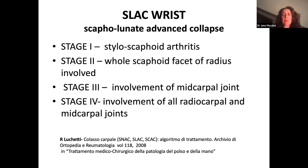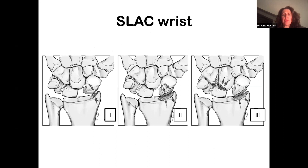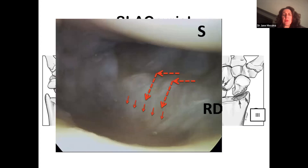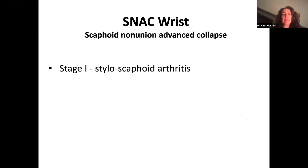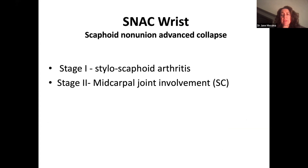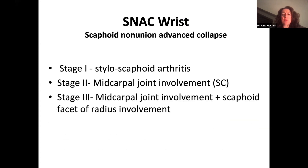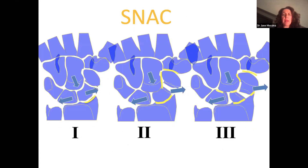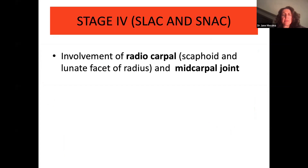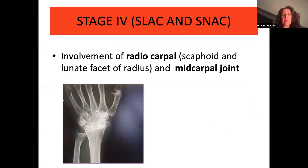Ricardo Lucchetti published different papers on this topic. In SLAC wrist, stage one has radiostyloid-scaphoid arthritis; stage two has mid-carpal joint involvement at the scaphocapitate joint; stage three involves all the mid-carpal joint and the scaphoid facet of the radius; and stage four is panarthritis with involvement of all radiocarpal and mid-carpal joints — similar to SNAC stage four. In SNAC, the mid-carpal is already involved at the scaphocapitate part in stage two.